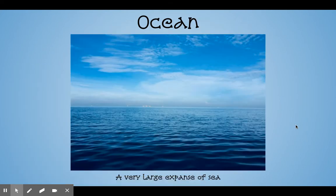An ocean is a very large expanse of sea. So an ocean means it's a lot of water. When you look out, usually you don't see much in the water — you might see boats and things like that, but you don't always see land. Ocean is also salt water.